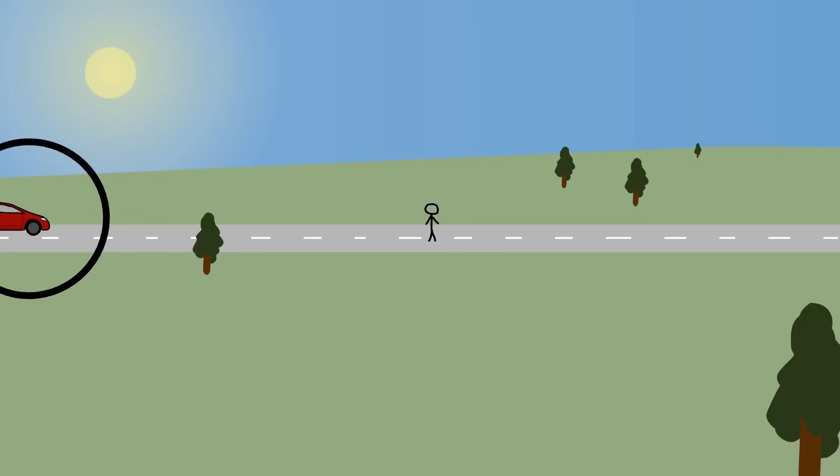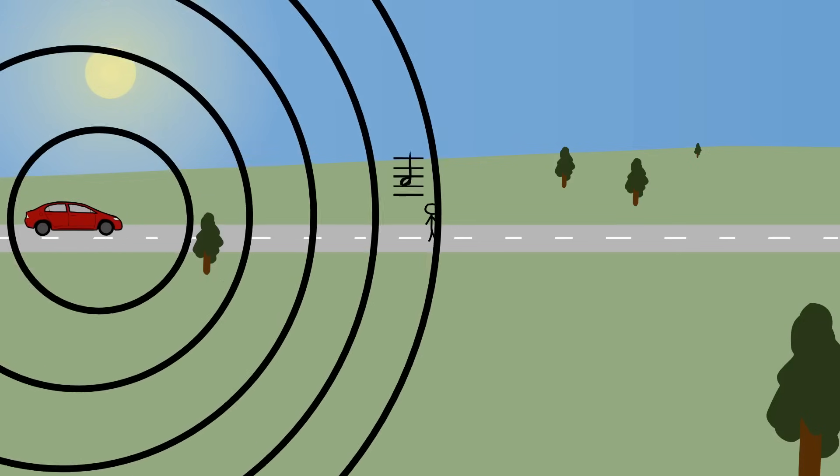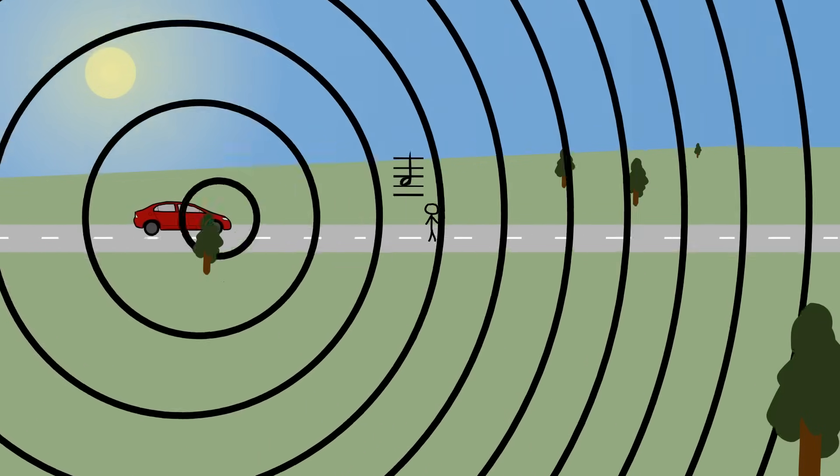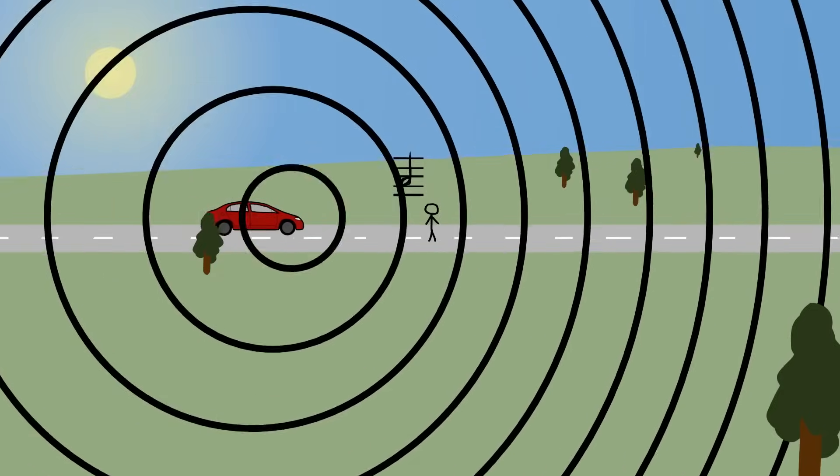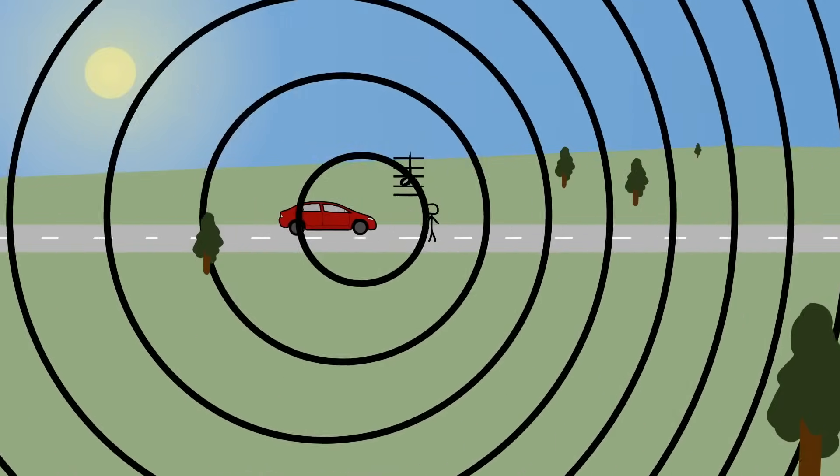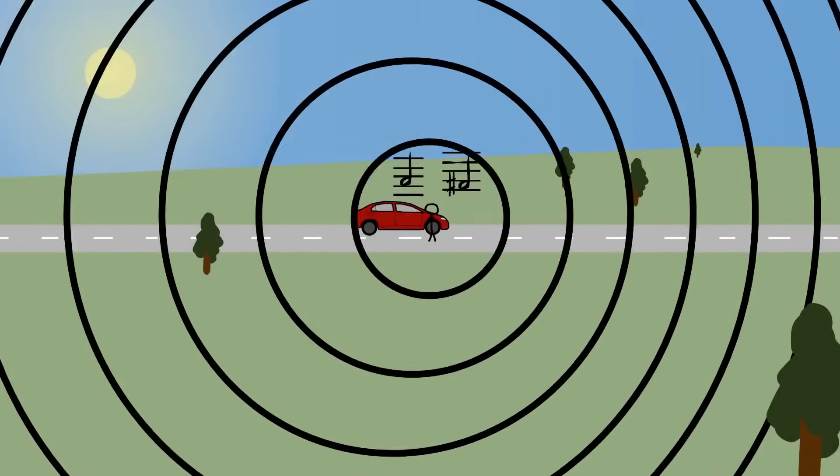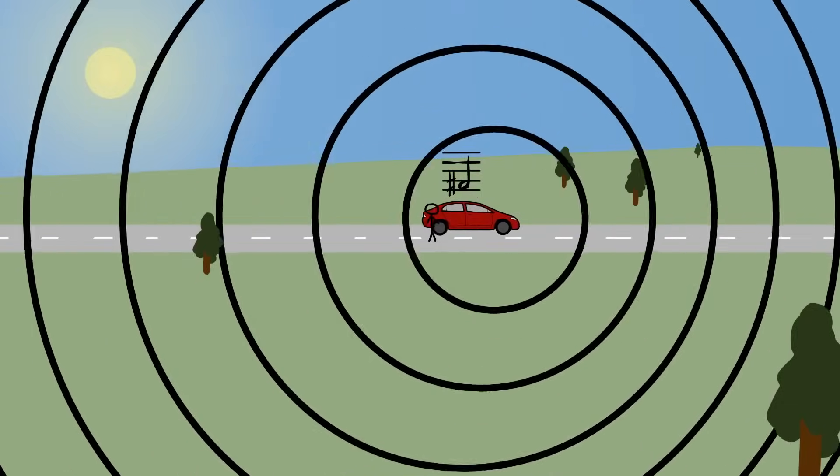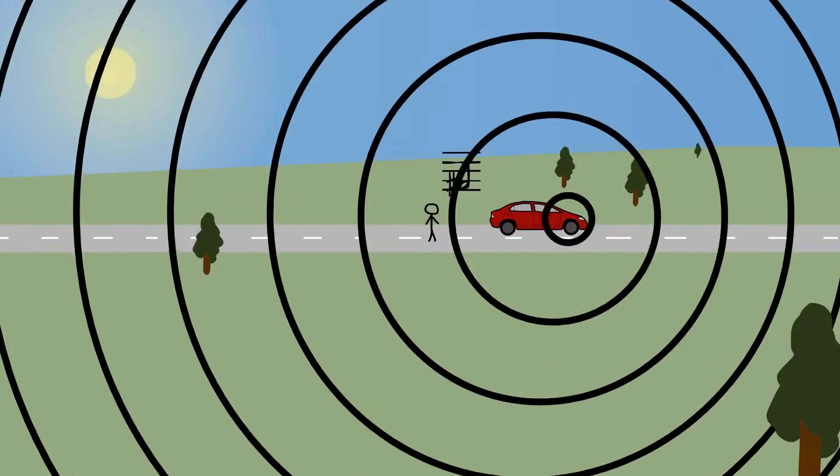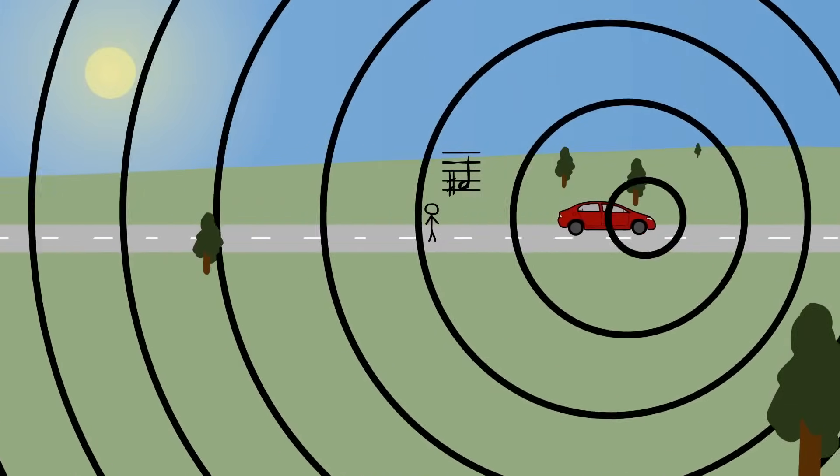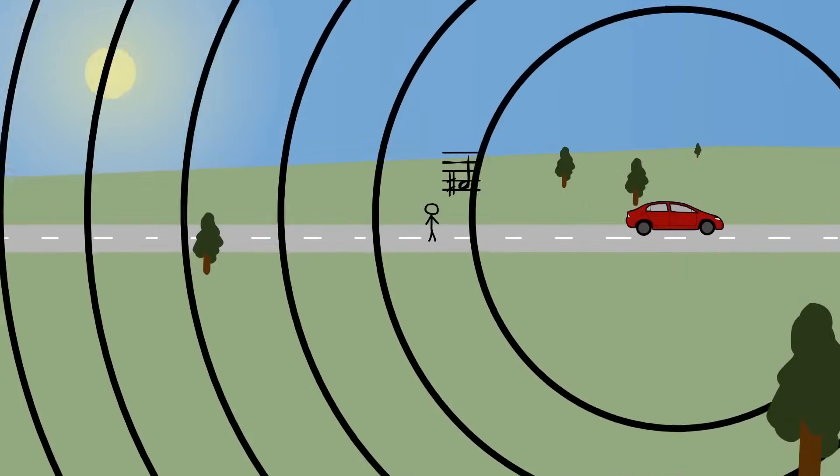As the vehicle's coming towards you, the sound waves that it's emitting bunch up, and so are delivered to you at a higher frequency, which you interpret as a higher pitch, because the frequency of sound waves is pitch. And then when the vehicle passes you and is moving away from you, the sound waves spread out, and so you hear them at a lower frequency, a lower pitch.